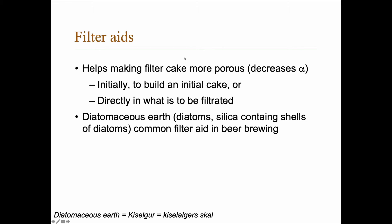Filter aids is something that is connected to both the outlier we saw in the filtration example, and this pressure dependence of the specific resistance alpha. Filter aids help making the filter cake more porous and decrease the filtration resistance alpha. It can be used initially to build up an initial cake, which might mean that in the initial phase, more particles actually get stuck in the cake instead of passing through, which might cause better behavior and not such a big outlier in the beginning.